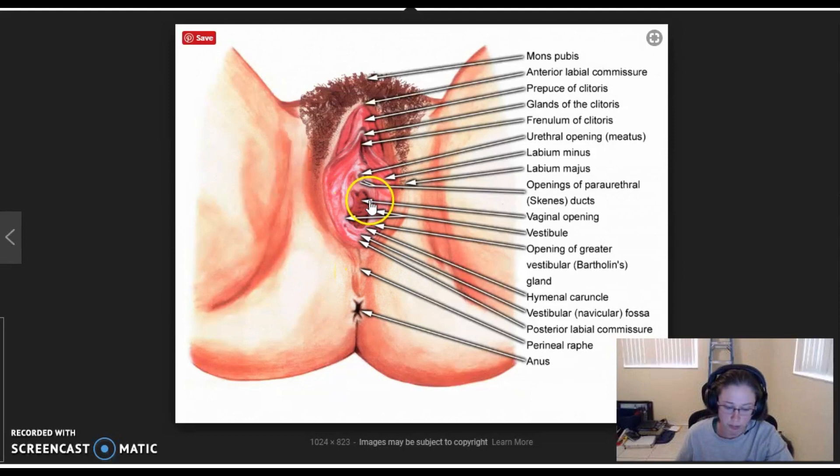Then you have your vaginal opening. I call that the introitus. It's just the medical word for it. You've got your vaginal opening here and then you have your urethral opening, which is where the urine comes out. You've got the g-spot again up here where that clitoris is. I think that's pretty general.